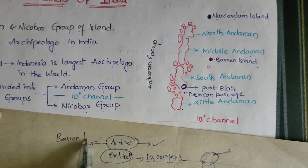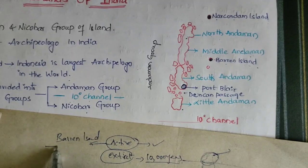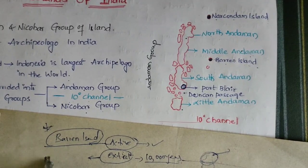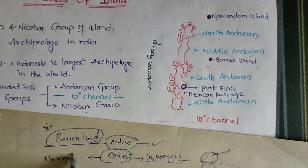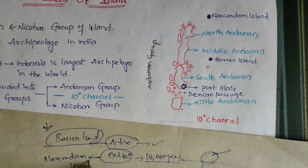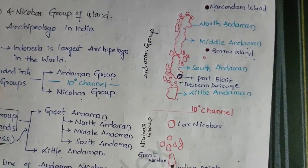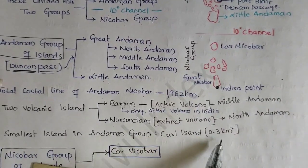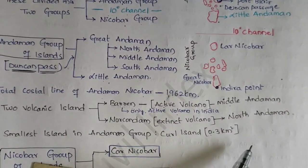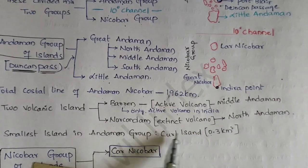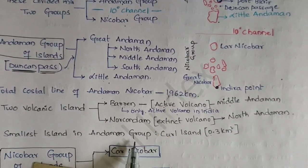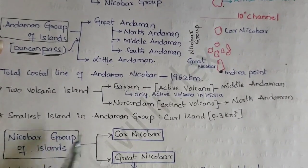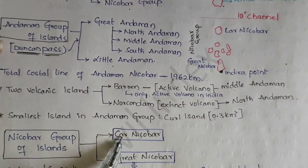Barren Island is the only active volcano island in India. The extinct volcano example is Narconum Island in North Andaman. The smallest island in Andaman and Nicobar is a coral island which is 0.3 square kilometers in area — that is the smallest island in the Andaman group.